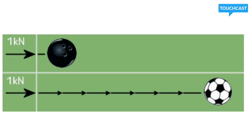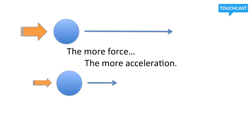Looking at this example, both balls were given the same amount of force — one newton. However, the soccer ball has a much greater acceleration. The reason being, the heavier the object is, or the more mass the object has, the less acceleration given the same amount of force. In another example with two objects of equal size, one has more acceleration and therefore more force. Or, if you put more force into the object, it will have a greater acceleration.